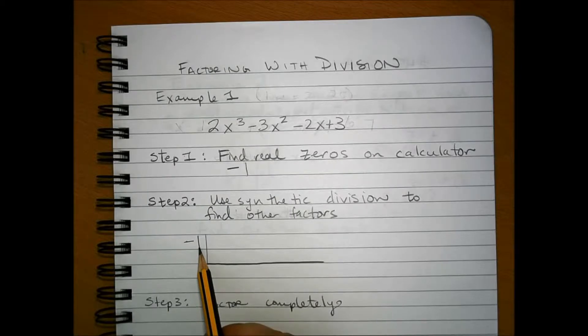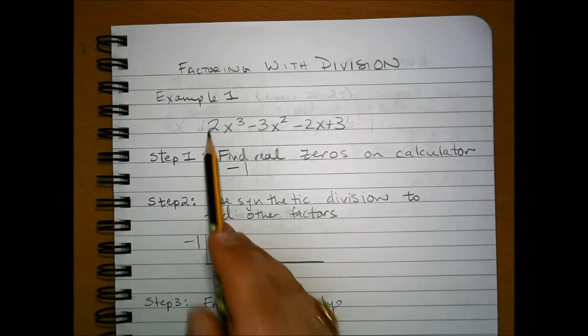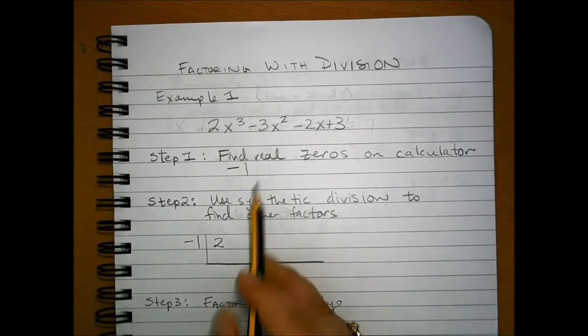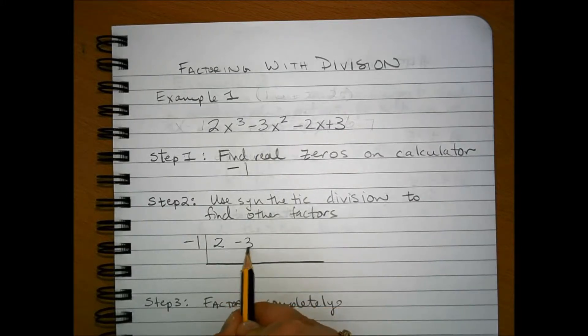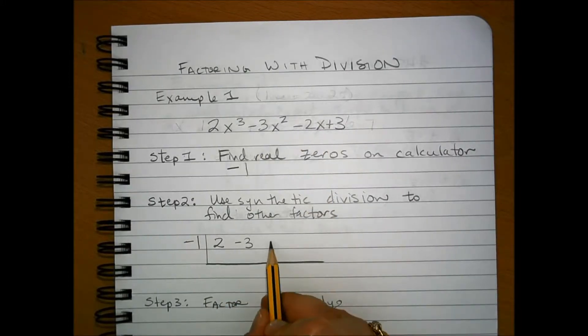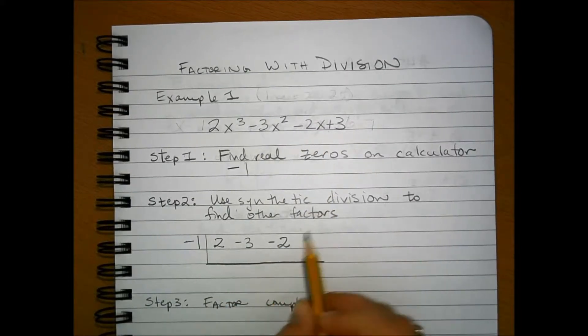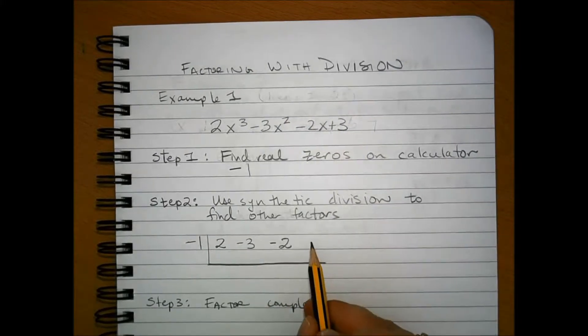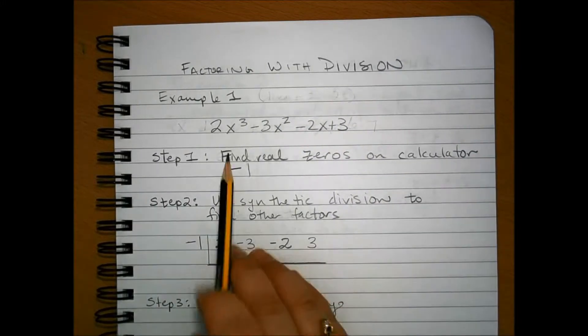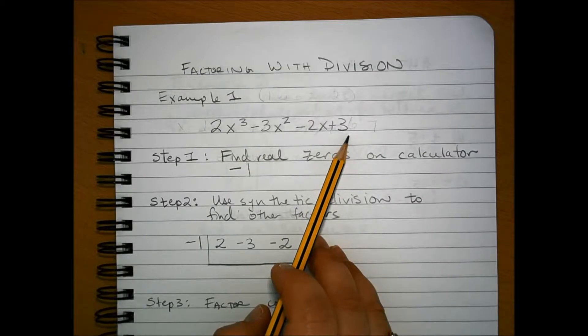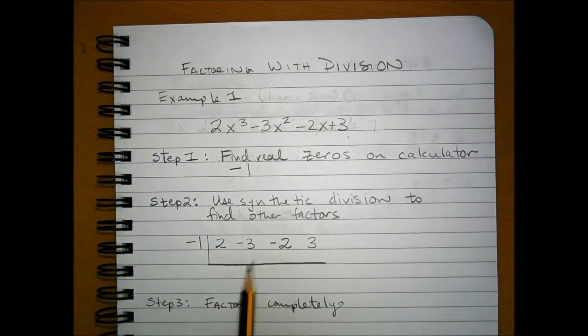The zero goes on the outside. Then we take the coefficients from the polynomial in the order in descending order of the exponents. So make sure that your polynomial is in standard form before you start setting this up.